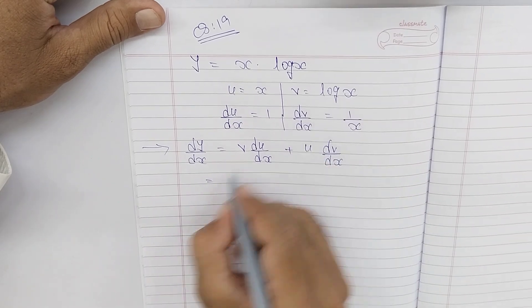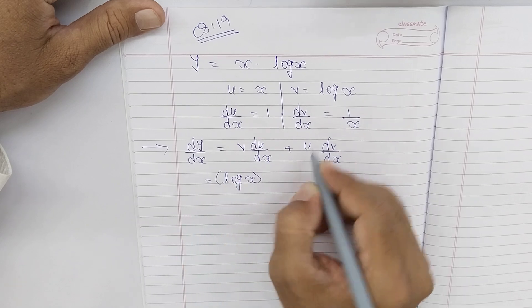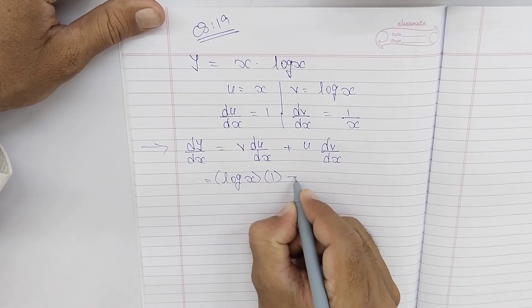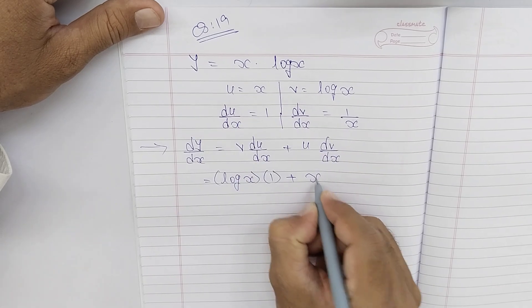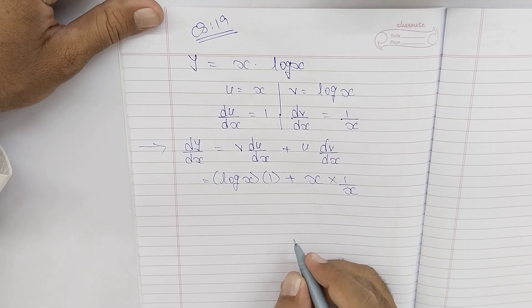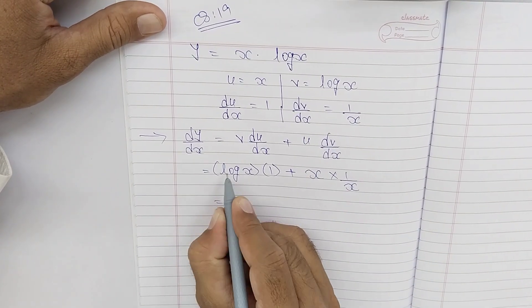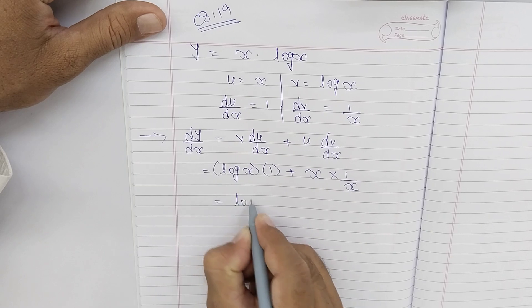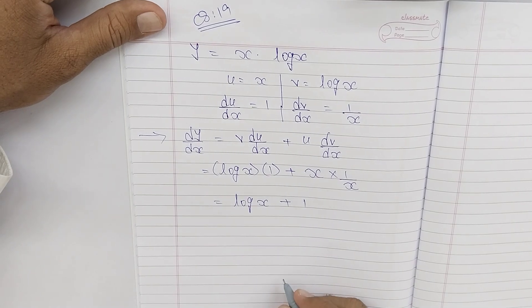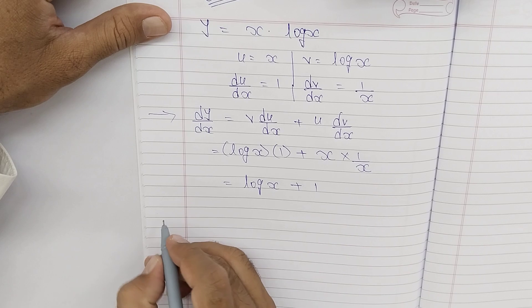So v ki value hai log(x), aur derivative of u is 1. Plus u ki value hai x, aur derivative of v is 1/x. Ab agar x·(1/x) cancel karte hain, toh answer hoga log(x) + 1. Yeh hua single derivative, yaani dy/dx = log(x) + 1.